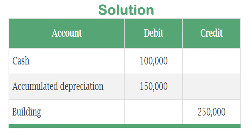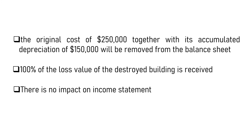Here is the solution. In this case, Thomas & Company can make the journal entry for the insurance claim received by debiting $100,000 into the cash account and $150,000 into the accumulated depreciation account, and crediting the original cost of $250,000 into the building account, as shown here. After this journal entry, the destroyed building with an original cost of $250,000, together with its accumulated depreciation of $150,000, will be removed from the balance sheet.